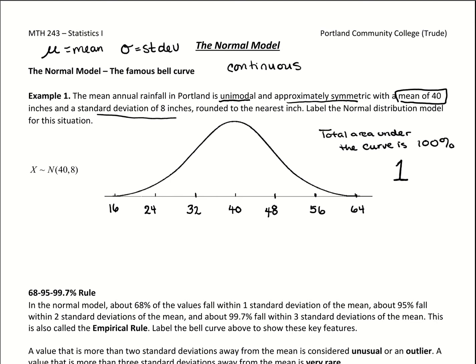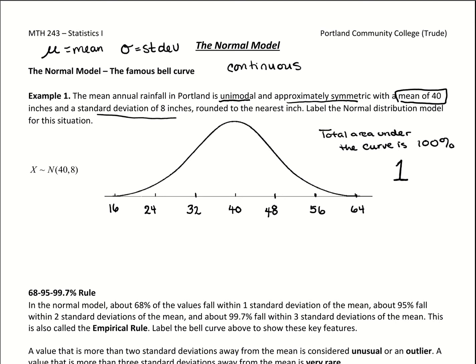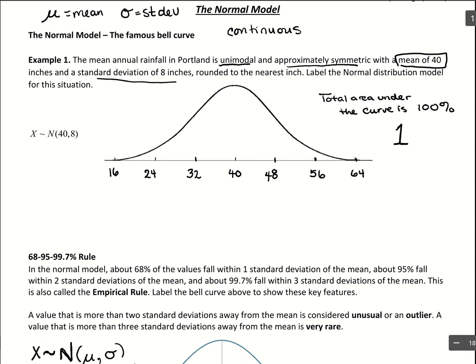The curve actually continues on forever — it's just that values way out in the tails are near impossible. For example, the probability that annual rainfall in Portland was over 100 inches would be way out in the tail at 100, and out there it's basically impossible, so we'd get a probability really close to zero. When we talk about probabilities for values more towards the middle, we get larger probabilities. With the bell-shaped curve, probability is an area.